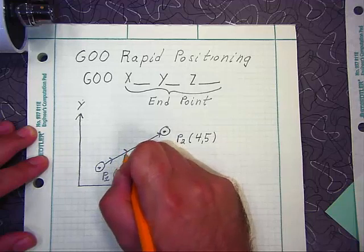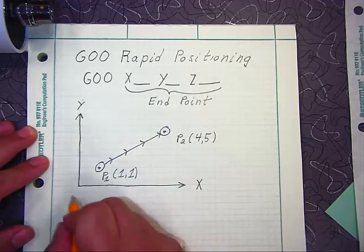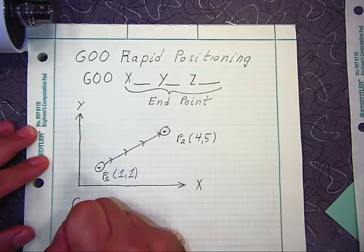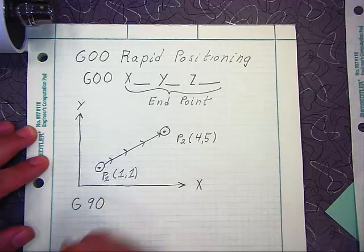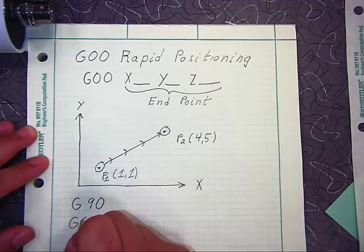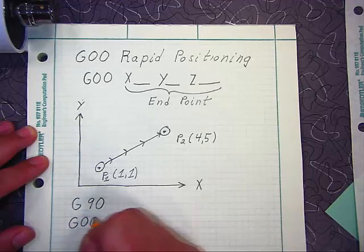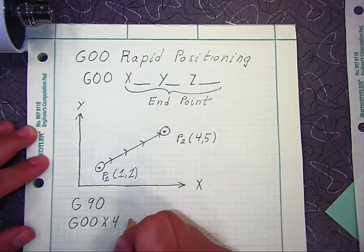Well, first of all, you have to understand whether you're in absolute or incremental coordinates. So if we start looking at the absolute coordinate example, we'd have a G90 callout, then a G00 code, X4 and Y5.